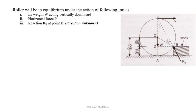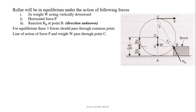For the body to be in equilibrium under three forces, the three forces should meet at a common point. The line of action of P is passing through point C. The line of action of W is passing through point C. Therefore, R_B should also pass through point C. Therefore, the line of action of R_B should be along the line BC. So R_B will be acting through this line BC.